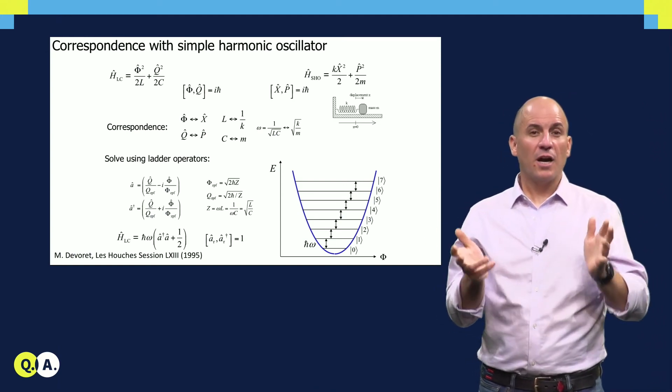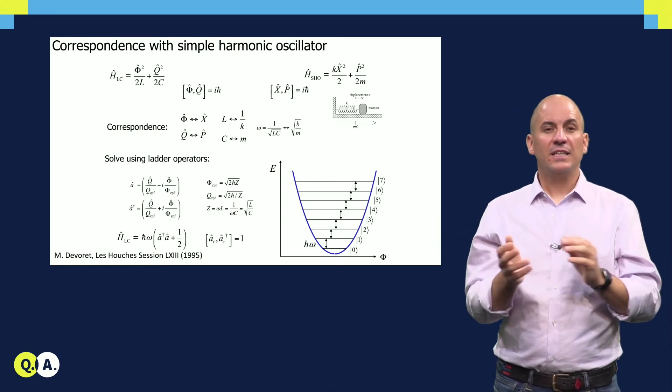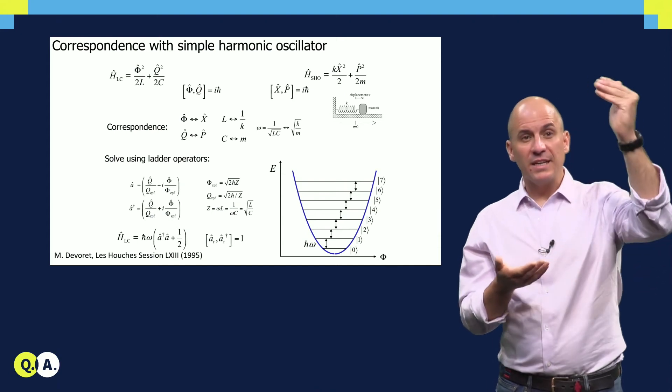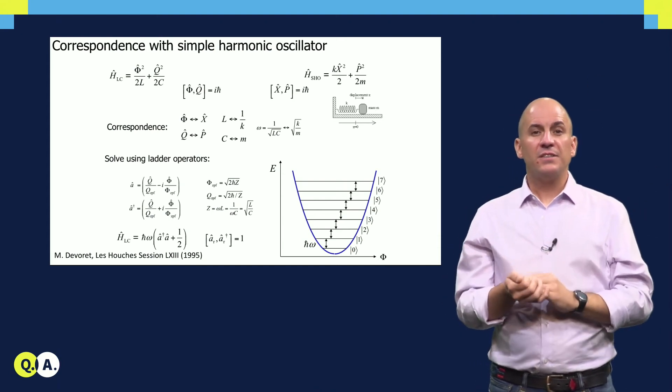But unfortunately, a harmonic spectrum does not a good qubit make. It is very difficult to confine the dynamics to just two levels, so leakage out of the qubit subspace is a permanent threat.